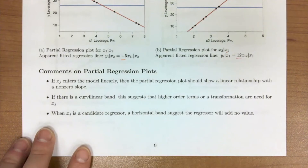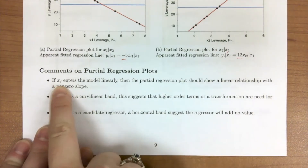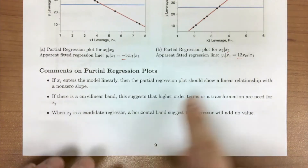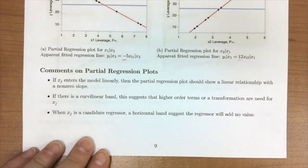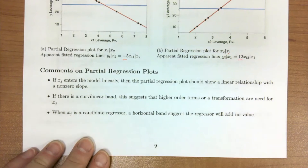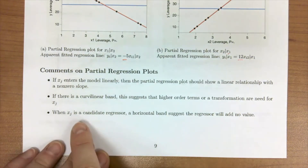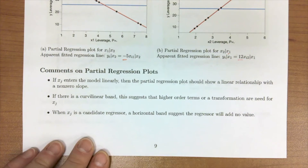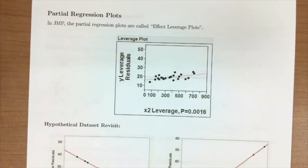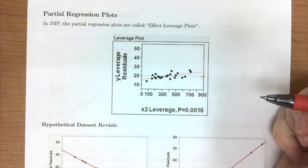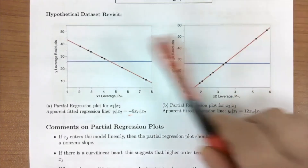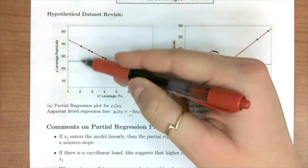A couple of other comments: if our xj enters the model linearly, then the partial plot should show a linear relationship with a non-zero slope. If there's a curvilinear band, this suggests that higher-order terms or transformations are needed — if it looks parabolic, you probably need a squared term. When xj is a candidate regressor and there's a horizontal band, the regressor probably has no added value — if the line is essentially flat along that blue line, it's probably not going to have a large impact.